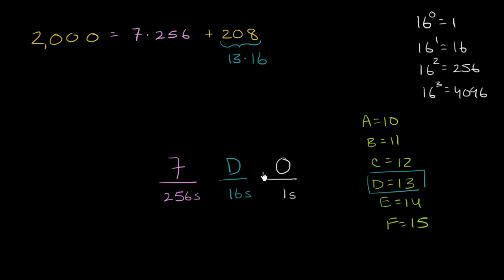So the number 7D0 in hexadecimal. So let me write this down. This is interesting. So 2000 in decimal form, that's when it's in decimal form, is equal to 7D0 when it is written in hexadecimal form. Hope you found that interesting.